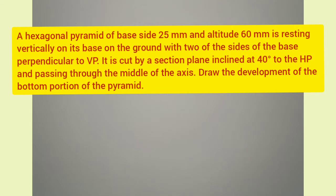Two base edges of the hexagonal pyramid are perpendicular to VP, and it is cut by a section plane inclined at 40 degrees to the HP, passing through the middle of the axis. We need to draw the development of the bottom portion of the pyramid.